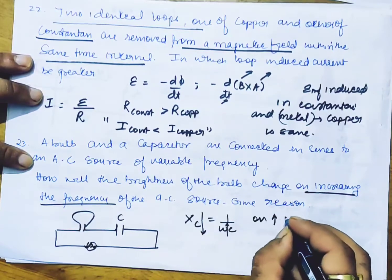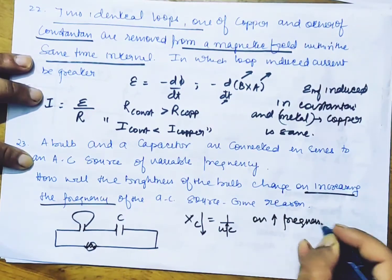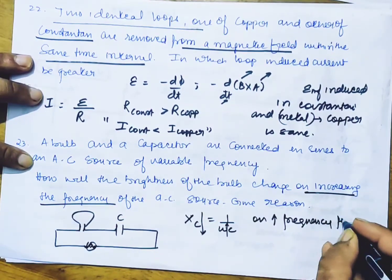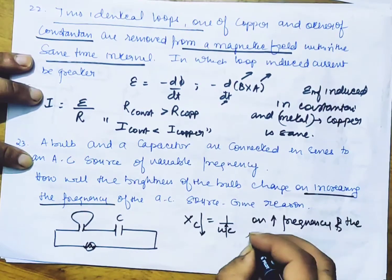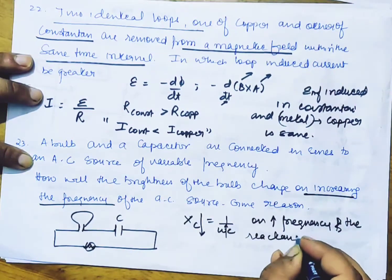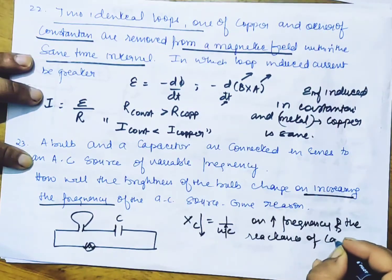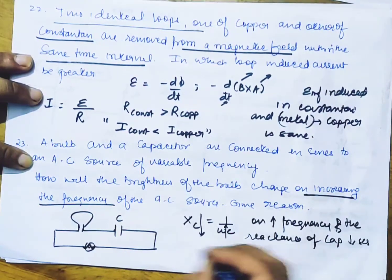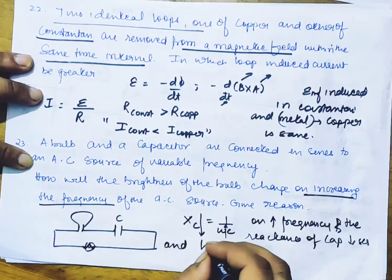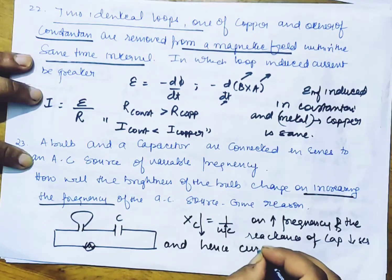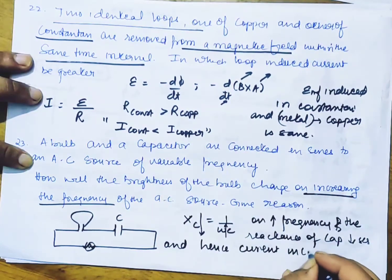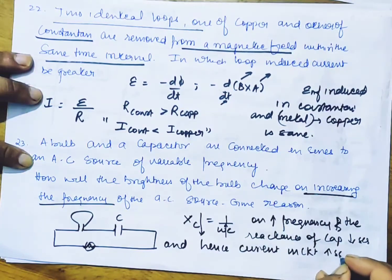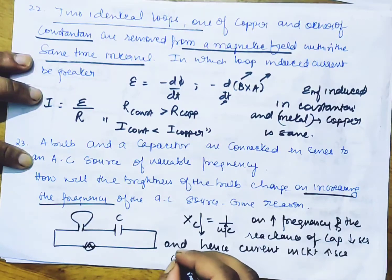So we can say on increasing frequency, the reactance of the capacitor decreases, and hence current in circuit increases, due to which brightness increases.